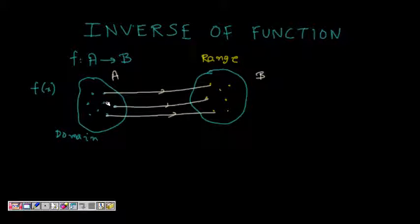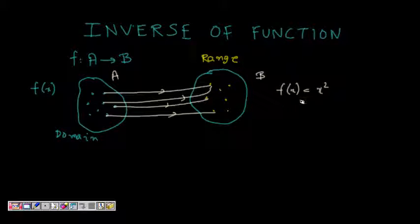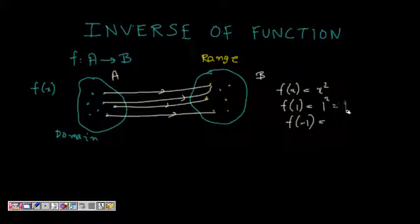However, in a function, two points from the domain can map to the same point in the range. For example, if f(x) = x², it is a perfectly valid function. f(1) = 1 and f(-1) = (-1)² = 1, so two points, 1 and -1, both map to 1 in the range.